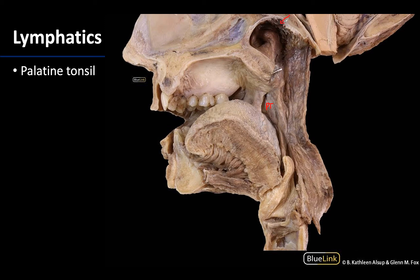And so we just know that anatomical variation is always a joy and we are lucky to be able to see a nice palatine tonsil here. The palatine tonsils are lateral parts of the circumpharyngeal lymphoid ring.